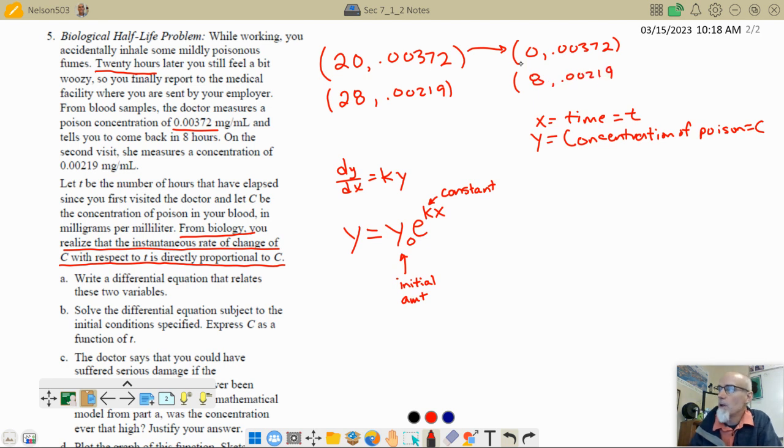Now, how does that really help me out? Well, this right here, this guy is my y sub 0, right here. This is my y sub 0, okay, y sub 0 equals 0.00372. So I'm going to come right down here and put that in, so 0.00372, all right?